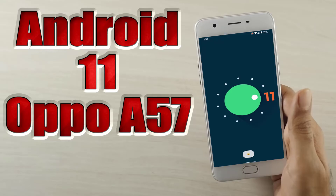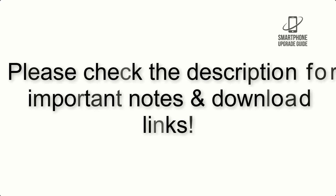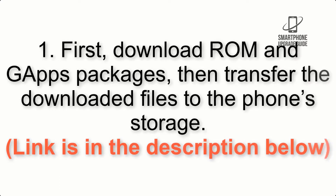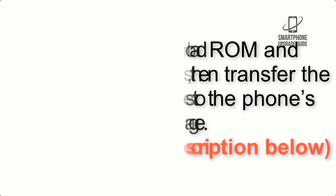Install Android 11 on Oppo A57 via Lineage OS 18.1. Please check the description for important notes and all the download links. First, download the ROM and GApps packages, then transfer the downloaded files to the phone storage. Link is in the description below.